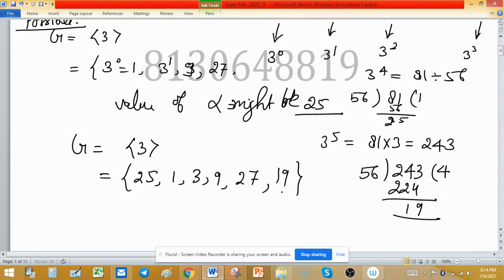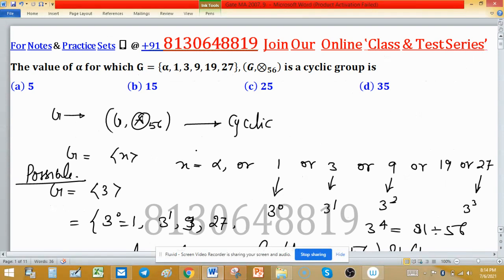As I told you, 3 may be the generator of G. Now it is clear that 3 is the generator of G, and the value of α we found is 25. So option C is correct.